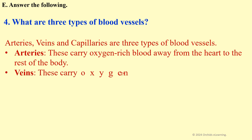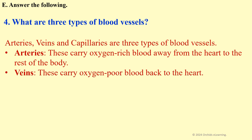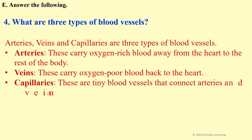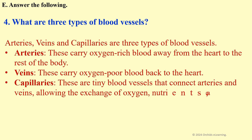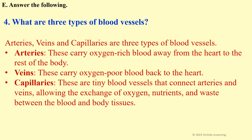Veins: these carry oxygen-poor blood back to the heart. Capillaries: these are tiny blood vessels that connect arteries and veins, allowing the exchange of oxygen, nutrients, and waste between the blood and body tissues.